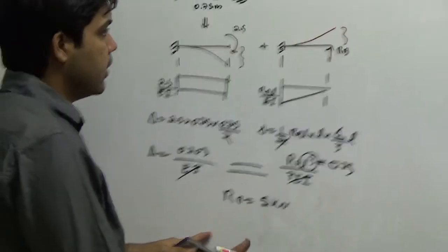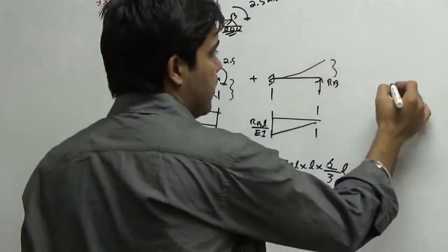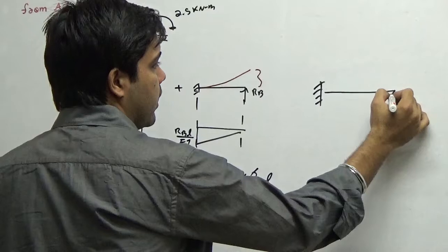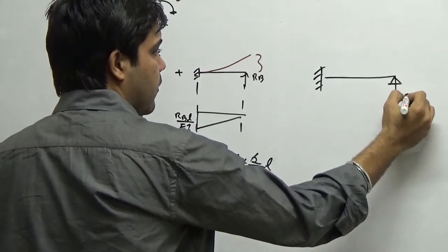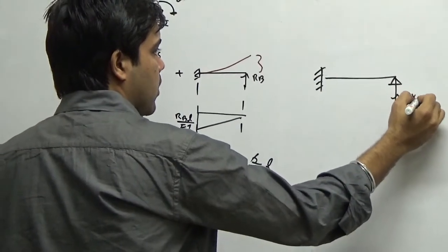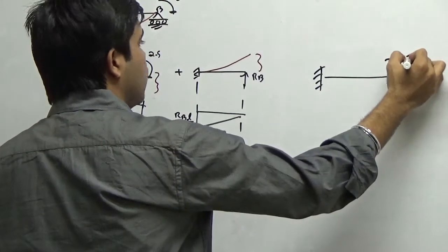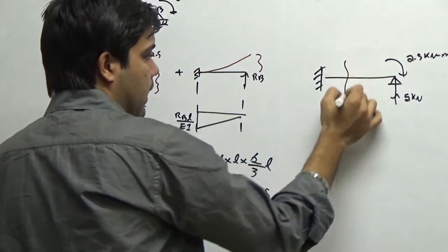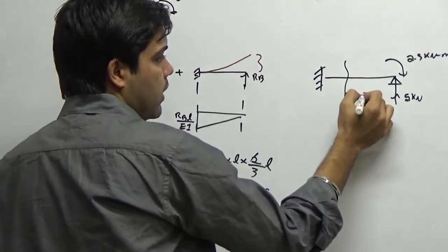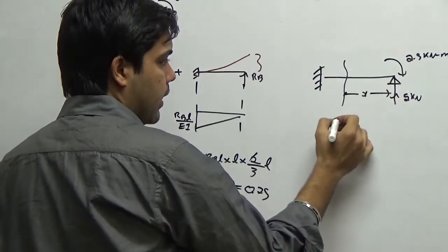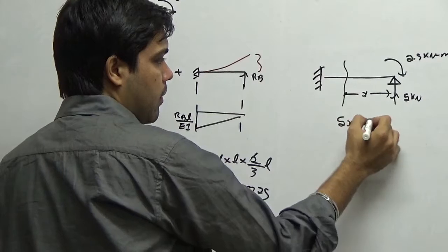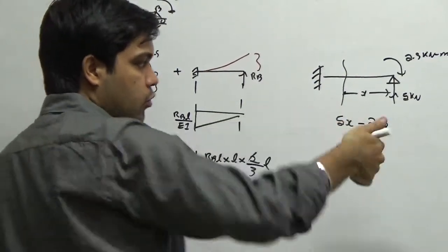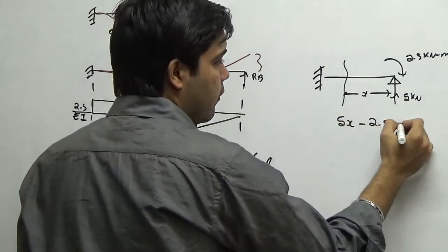Having understood this, I can simply upload it here. I have analyzed for one reaction — that is 5 kilonewton — and there is a moment of 2.5 kilonewton meter. I can write the bending moment equation at any distance x as 5 times x minus 2.5.